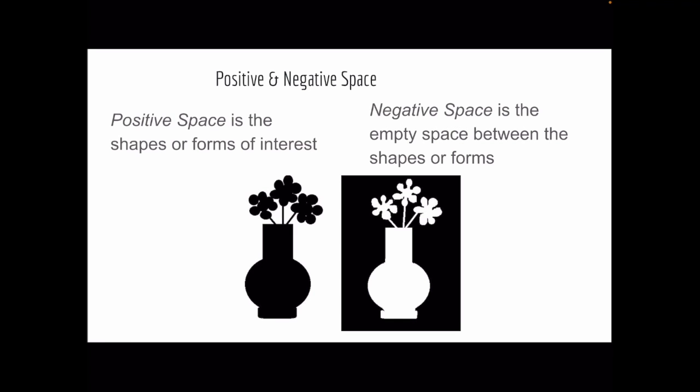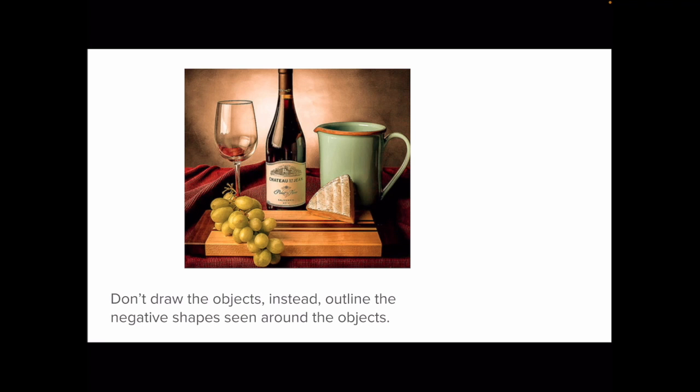For this quick assignment, I don't want you to actually draw the objects. Instead, I would like for you to outline the negative shapes seen around the objects. So you can decide here if you want to include the cutting board as positive space or as negative space.